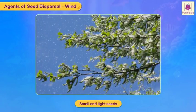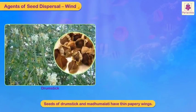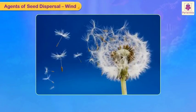Seeds dispersed by wind are small and light. Some are hairy — for example, cotton seeds and dandelion. Seeds of drumstick and madhumalati have thin tapering wings. We often see them floating in the air.